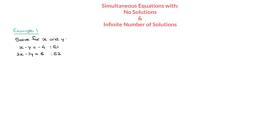Let's solve this by elimination, choosing to eliminate the y's. The first equation has 1y and the second has 3y's. So to eliminate the y's, I'll multiply the entire first equation by 3. The left-hand side becomes 3x minus 3y, and the right-hand side becomes 3 times negative 4, which is negative 12. That's our new equation 1.